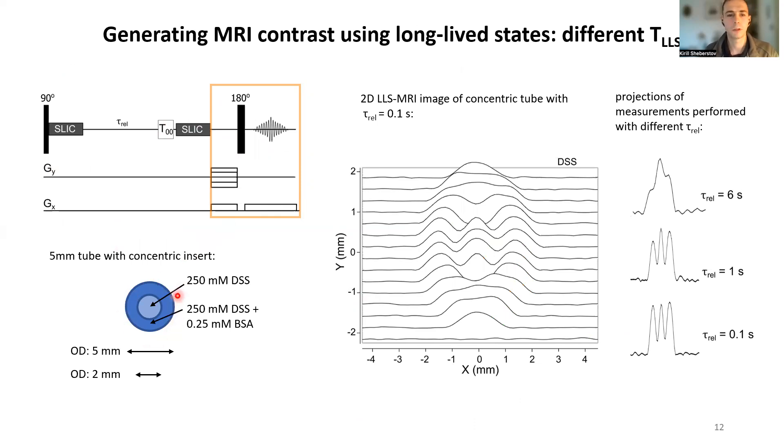And the outer tube contained DSS with a little bit of addition of BSA. Again, the ratio of these concentrations was such that you cannot observe any contrast in standard MRI approaches like T2-based contrast.